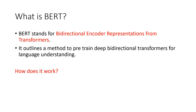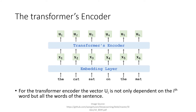How does BERT work? To understand how BERT works, we need to first understand how a transformer encodes. The transformer transforms the input to a different vector space, drawing parallel to a Fourier transform which transforms time domain to frequency domain. For example, the sentence 'the cat sat on the mat' is fed into an encoding layer and then a transformer encoder. Each output of the transformer encoder is dependent on each and every input of the embedding layer — so the output U2 is not only dependent on the input 'cat' but also on the other words: 'sat on the mat.'